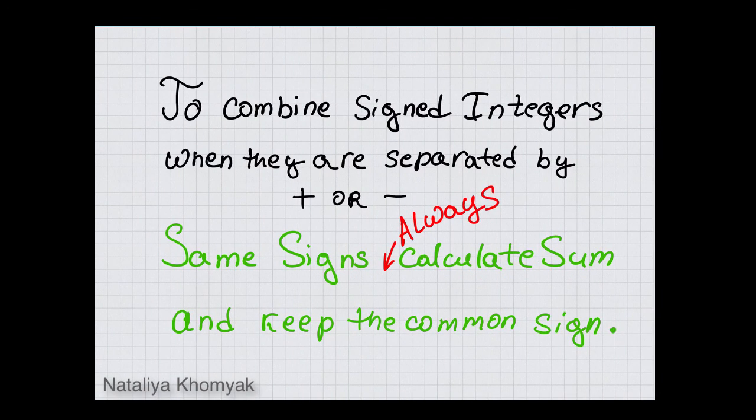So, to combine signed integers when they are separated by plus or minus, same signs, always calculate sum and keep the common sign. That's all.